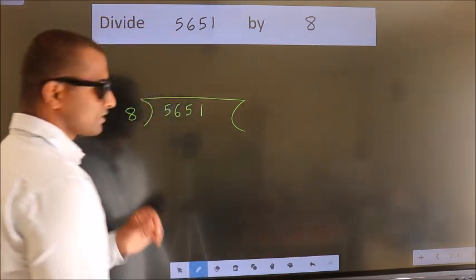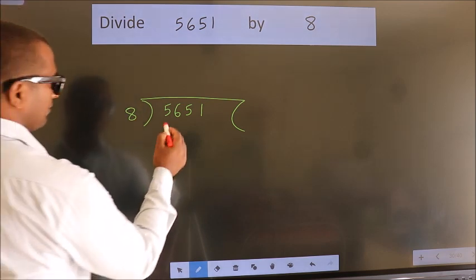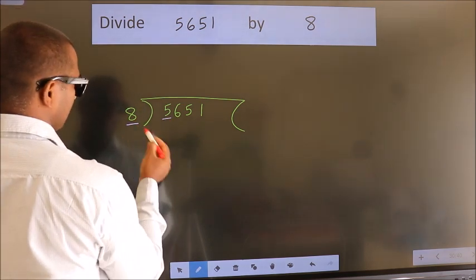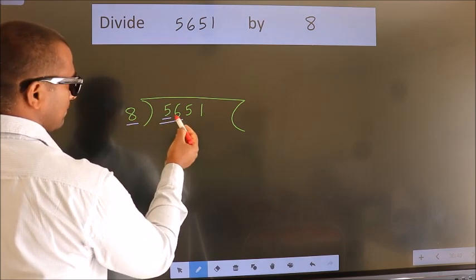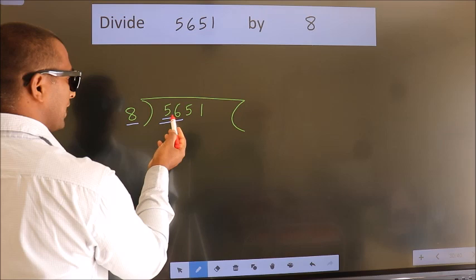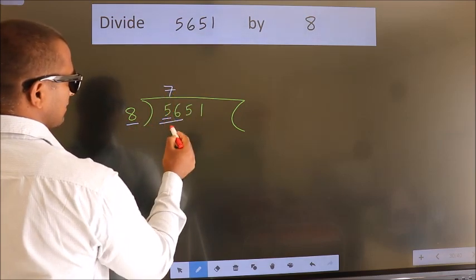This is your step 1. Next, here we have 5, here 8. 5 smaller than 8. So we should take two numbers, 56. When do we get 56 in 8 table? 8 7's 56.